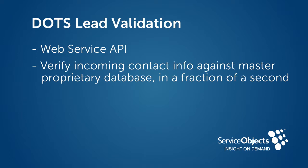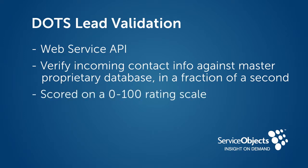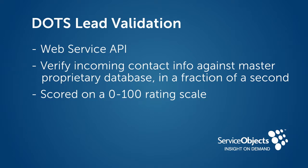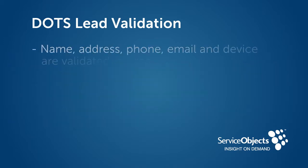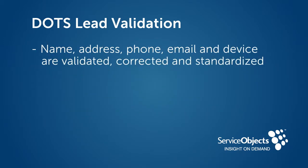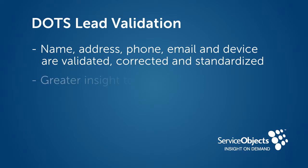With DOTS Lead Validation, incoming leads are scored on a zero to 100 rating scale using blended data algorithms based on proven audience and conversion models. Data elements such as name, address, phone, email, and device are validated, corrected, and standardized, providing a greater insight into a lead's true potential.